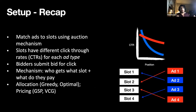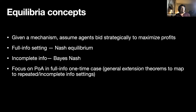Just to recap our setup: we're going to match ads to slots using an auction. Slots have different click-through rates, and these differ by ad types. Bidders submit their bids for the click, and everyone's thinking in terms of expected value because this happens so often. The mechanism decides who gets what slot and what they pay, and we have these four auctions that we're considering. We'll assume agents are bidding strategically to maximize profits — they don't have to bid their value; they can lie. We'll look at both the full information Nash setting, where we'll look at the price of anarchy, and also the incomplete information setting to characterize Bayes-Nash equilibrium.